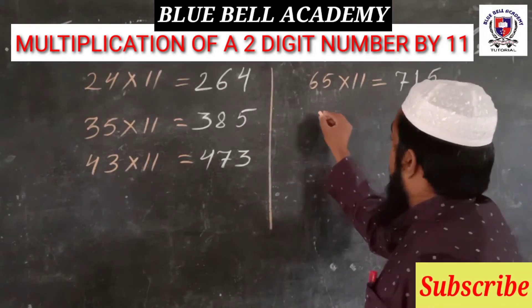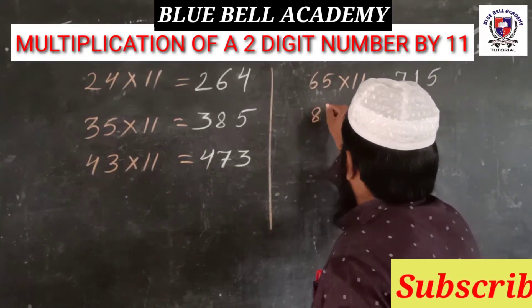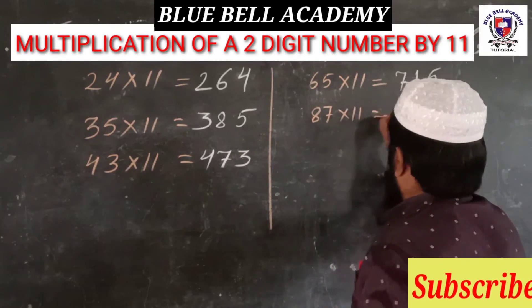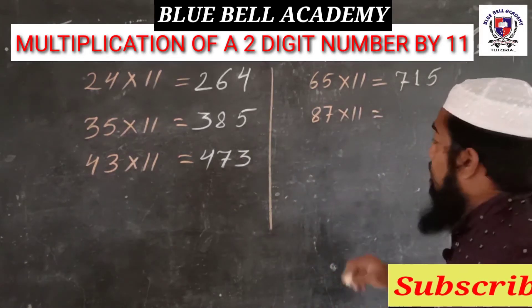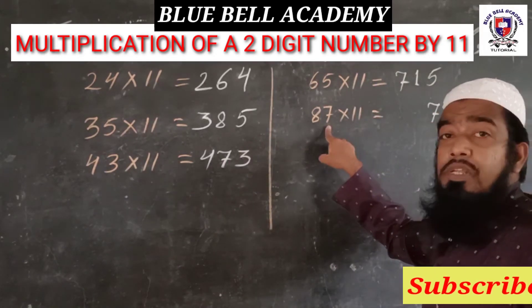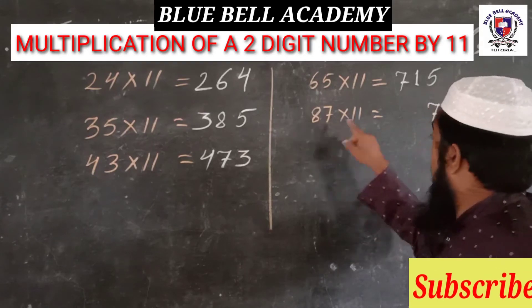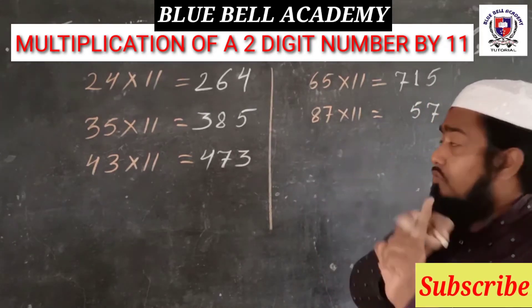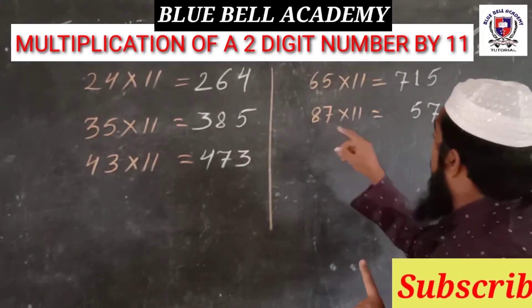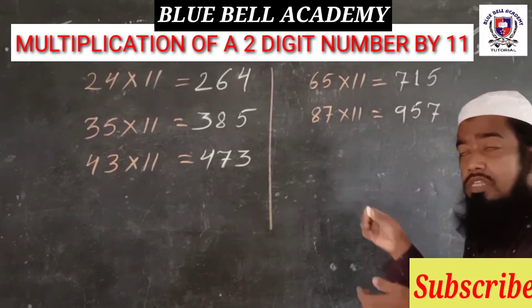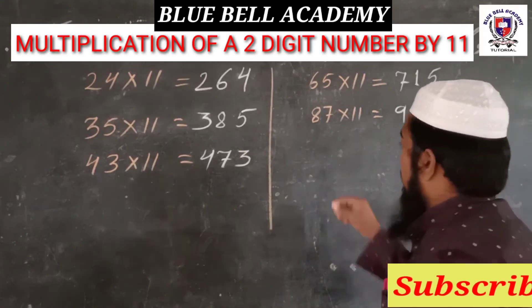Let's take another number: 87 into 11. First, write 7 here. Then 8 plus 7 is 15, so write 5 and carry the 1. Then 8 plus 1 is 9. So 957 is your answer.